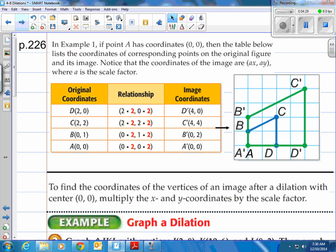Alright, set an example one, if you remember this one right here. If point A actually had coordinates of zero, zero, so if we made this the origin, this location right here, the origin, then the table below lists the coordinates of corresponding points on the original figure and its image. Notice that the coordinates of the image are basically taking the scale factor A and multiplying it by X and Y, the values.